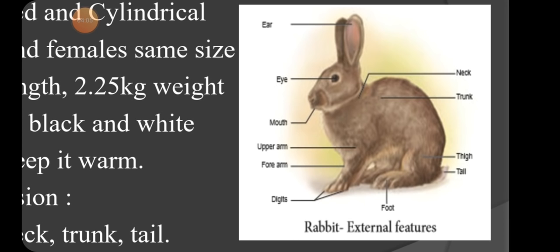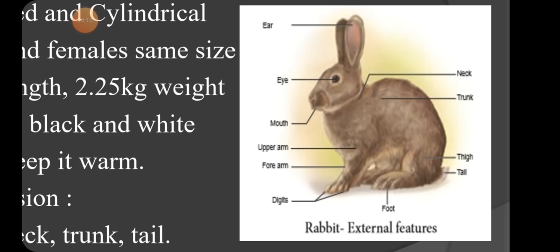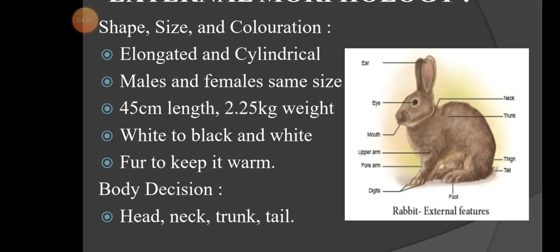Regarding external morphology, the structure from the top includes eyes, mouth, upper arm, forearm, and digits (fingers). At the tip of the digits, claws are present — claws meaning nails. At the back side, neck, trunk, thighs, and tail are also present.